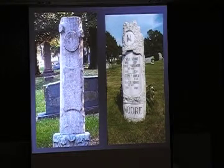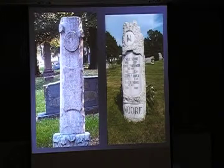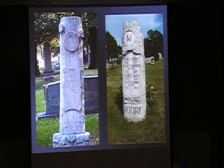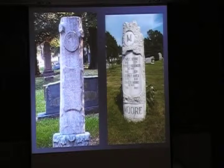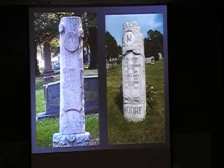An audience member asks about a marker with multiple names on different sides seen in a rural cemetery — square or rectangular with a different name on each face. The speaker responds: it could mean burials are arranged around a central plot marker, possibly extended family or in-laws. Or it may simply be the way names were arranged, with burials actually on one side. You'd have to get the cemetery records to know for sure.